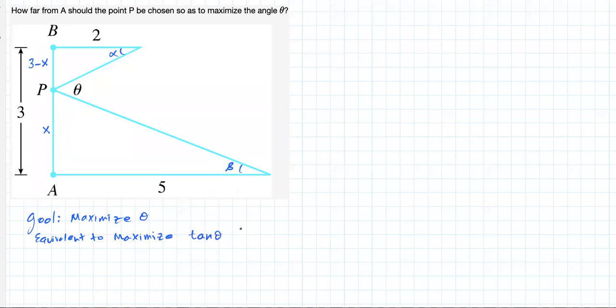And why is that? Well, notice the graph of the tangent function between 0 and pi over 2 is strictly increasing. That is the reason. Clearly, this theta is between 0 and pi over 2 radians, between 0 and 90 degrees. So we're going to use this trick.